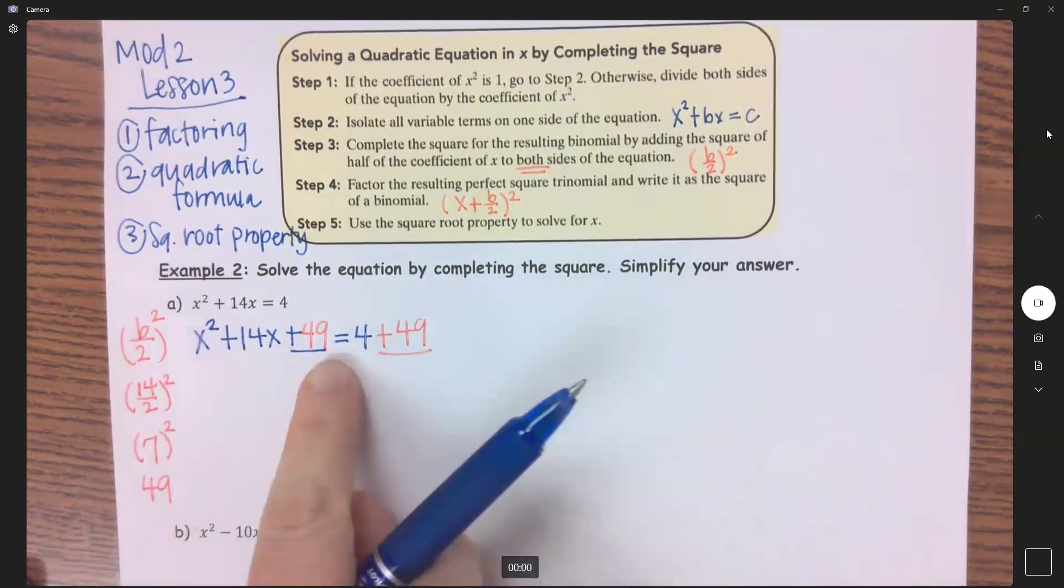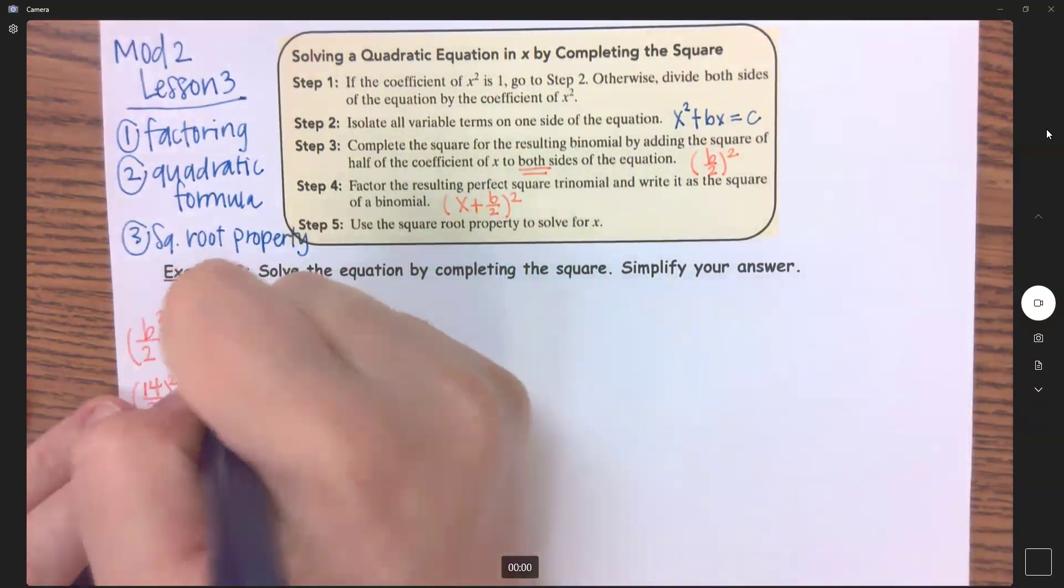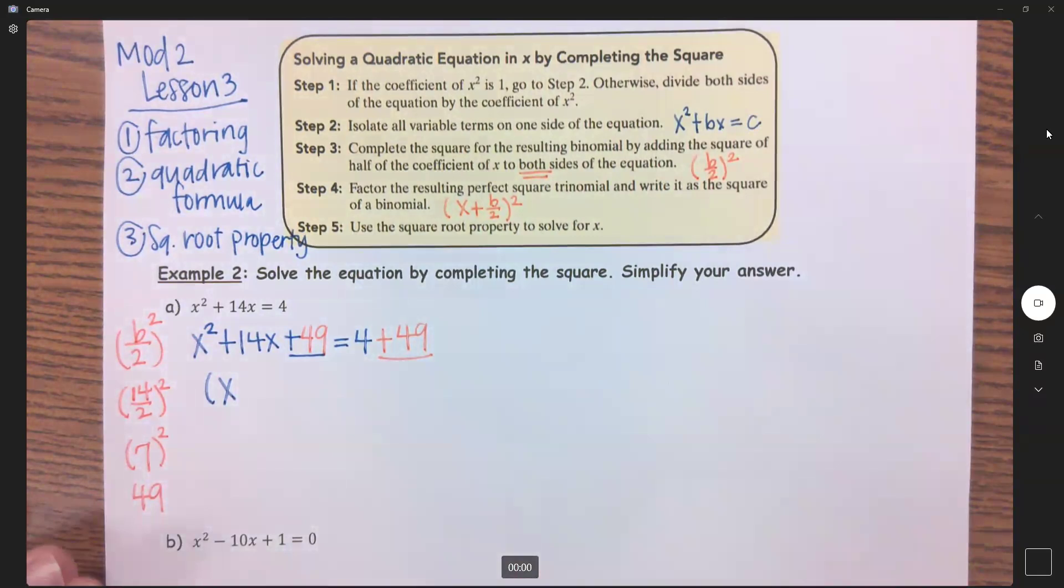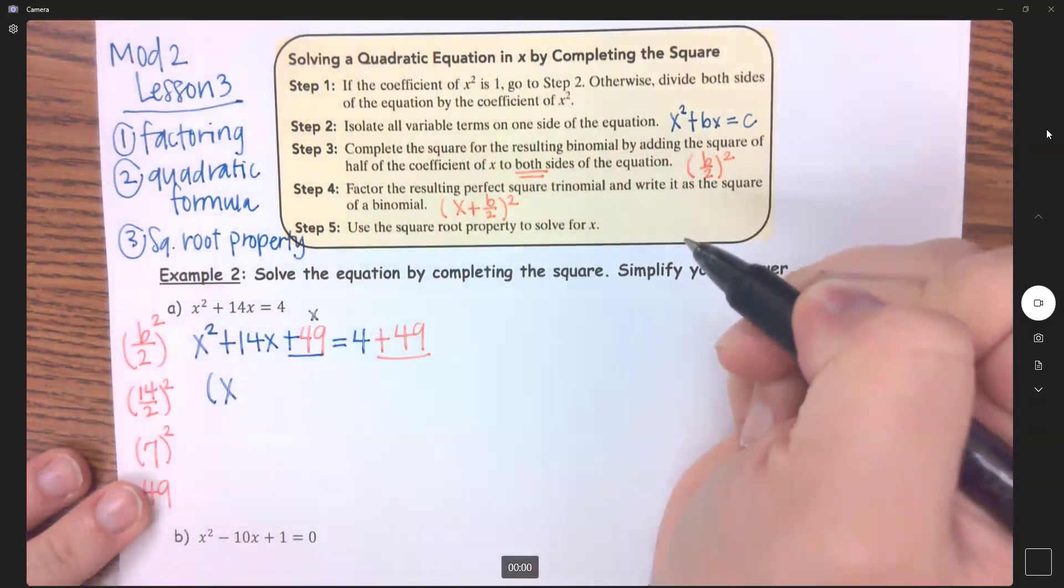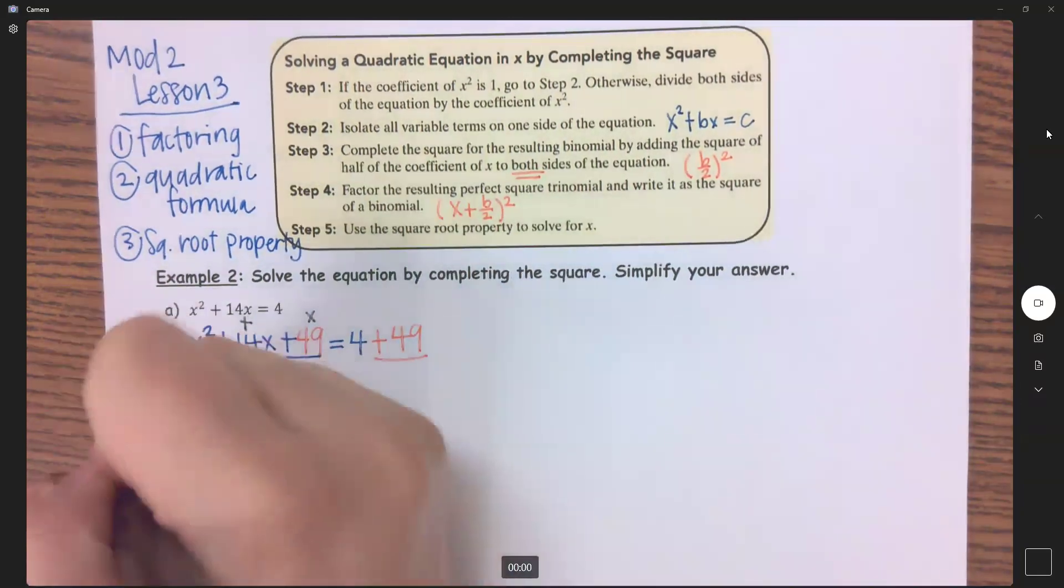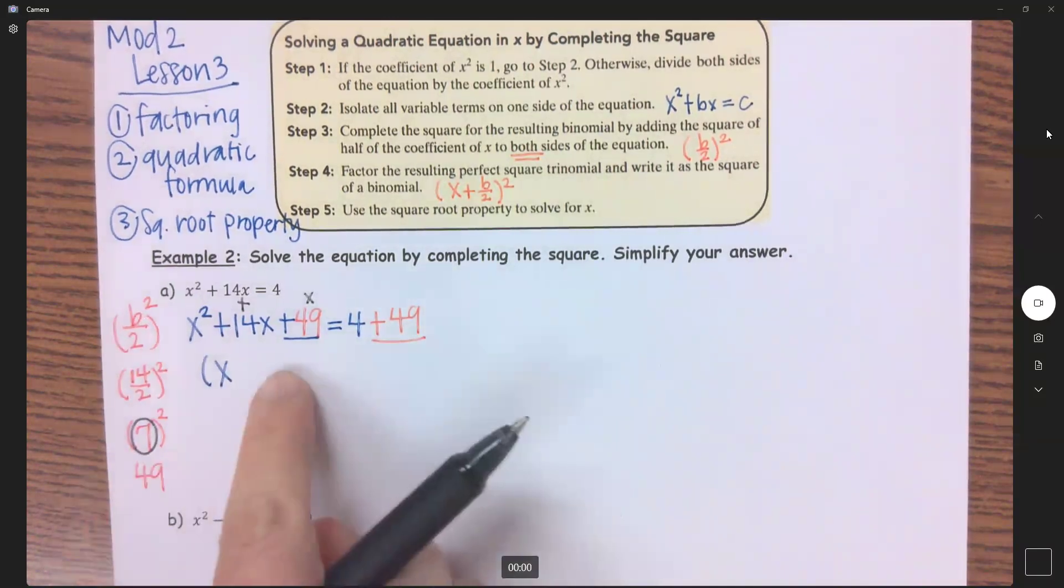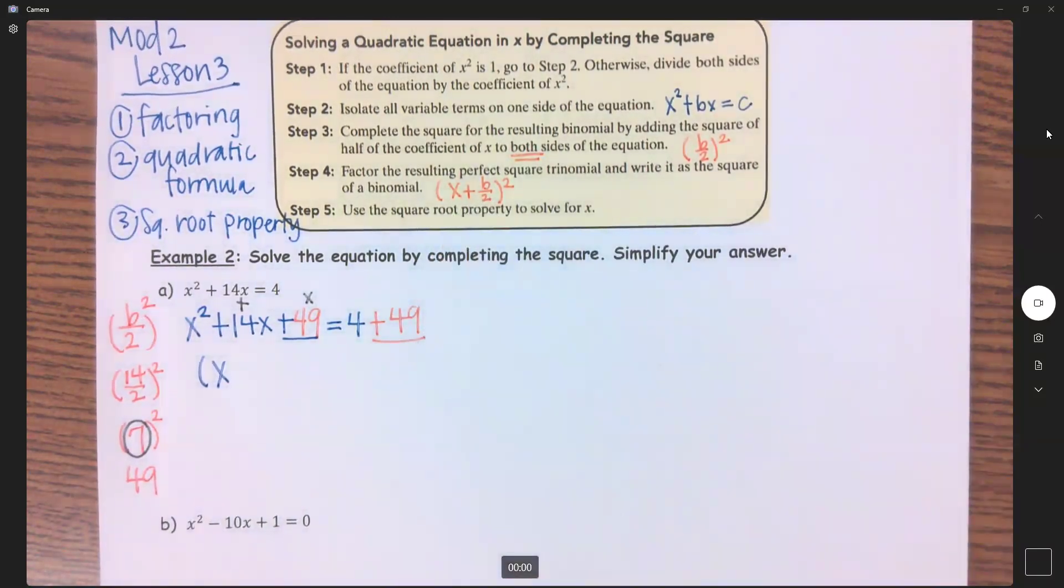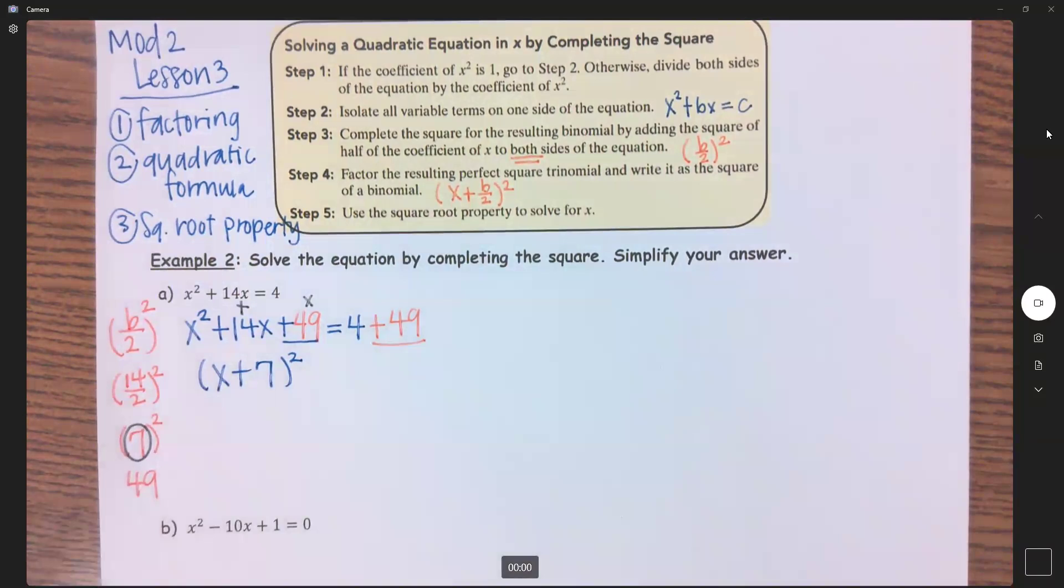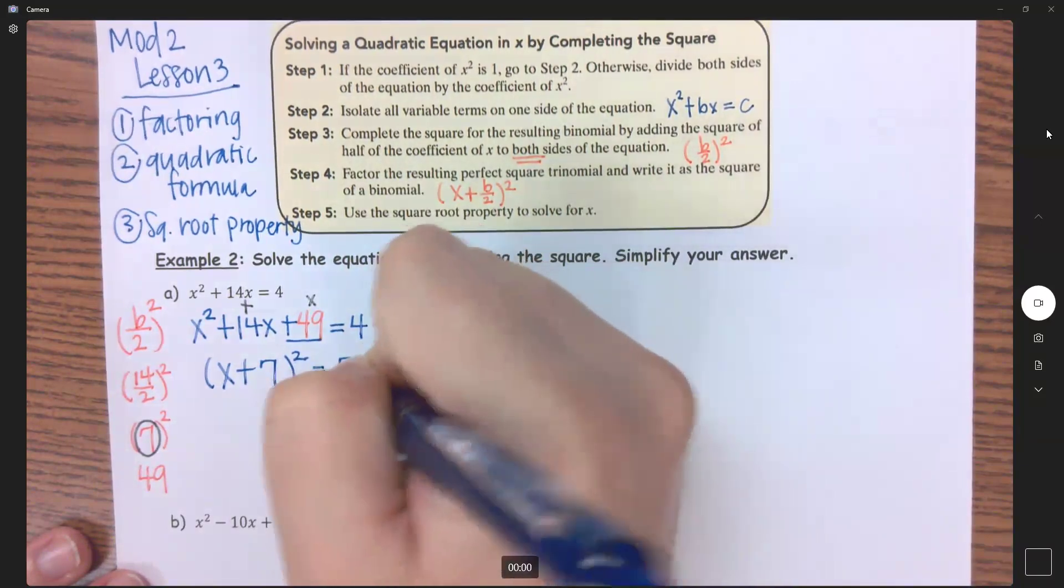So now I need to factor this, and it will always factor in this form here. If I needed to ask myself what multiplies to 49 but adds up to 14, that is 7 and 7, which is what we got right here. So whatever that b/2 portion is, that's what we're going to be adding in right here. So this is (x + 7)². If you expand that out or foil, you get to this, and that equals 53.